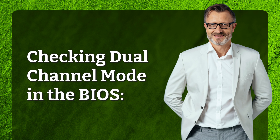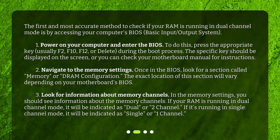Checking dual channel mode in the BIOS. The first and most accurate method to check if your RAM is running in dual channel mode is by accessing your computer's BIOS (Basic Input/Output System). Power on your computer and enter the BIOS by pressing the appropriate key — usually F2, F10, F12, or Delete — during the boot process. The specific key should be displayed on the screen, or you can check your motherboard manual for instructions.